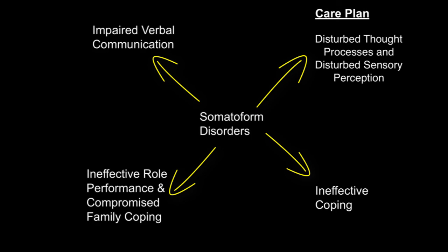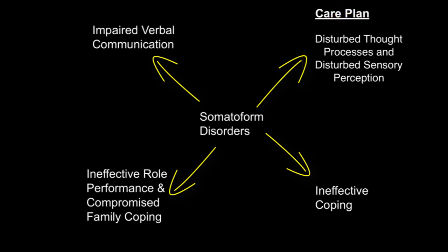For disturbed thought processes and disturbed sensory perception, help the patient improve the capacity for perception and thinking by supporting general measures to reduce anxiety, such as thought-stopping, reframing, and imagery. Maintain a calm, unhurried attitude towards the patient, listen carefully, and maintain an objective, undistorted view of reality. Avoid a premature challenge to the patient's symptoms and complaints. As patients gradually relinquish their defenses, propose other ways of understanding the condition, such as by suggesting a psychological explanation for a physical complaint.